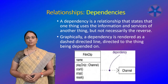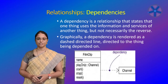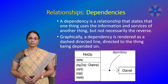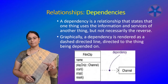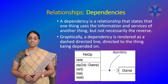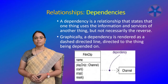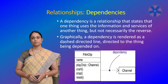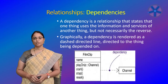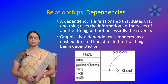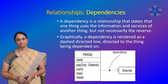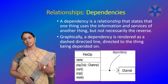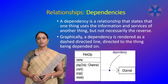For example, a temperature ramp depends on the temperature controller. Such relationships are represented using dependency. If the used class changes, the operations of the other class may also be affected, because the used class may present a different interface or behavior. In UML, you can also create dependencies among nodes and packages. For instance, film clip depends on the channel — if you change the channel, the film clip also changes.